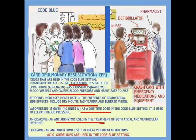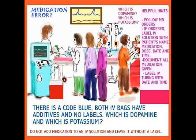When a code blue happens — a cardiopulmonary arrest — it usually starts off with a lot of chaos. The code is called and people rush to the bedside. There might be 8 to 10 people in a very small area: respiratory, someone trying to intubate the patient, the code cart, someone trying to shock the patient, EKGs, IV fluids, the lab, and so on. It is a very dangerous time. You have to be extremely careful that you do not hang drugs and forget to label them. Here is an example: a code blue occurred and both IV bags were hung with no labels. How do you decide which is dopamine and which is potassium? It has been known to happen. When you have a patient in a critical situation like this, keep your wits about you and make certain that you label all medications.